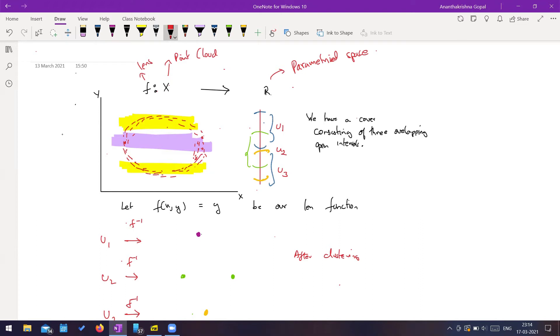Now, what my lens function is, is I'm just going to project everything onto the y axis. So f of (x,y) is equal to y. Next, what we do is we look at the inverse images for each of these open covers. So for u1, I end up coming here. For u2, I end up coming here. U3, I end up coming here.